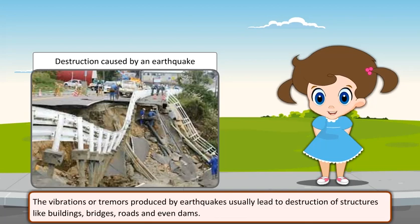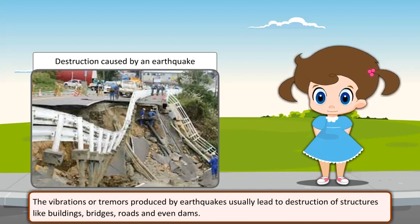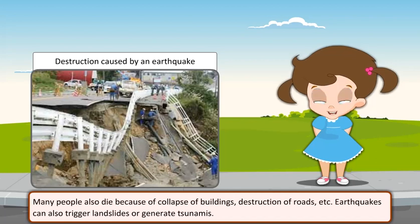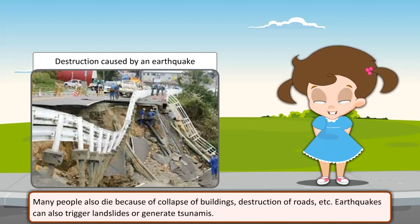The vibrations or tremors produced by earthquakes usually lead to destruction of structures like buildings, bridges, roads, and even dams. Many people also die because of the collapsing of buildings, destruction of roads, etc. Earthquakes can also trigger landslides or generate tsunamis.